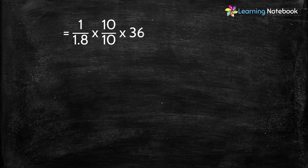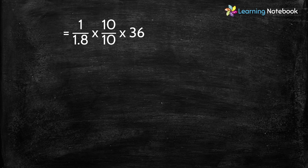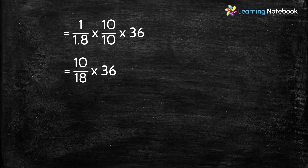So let's remove the decimal point. Since we have only one decimal place, let's multiply the numerator and denominator by 10. We get 1 upon 1.8 into 10 upon 10 into 36. Now 1 into 10 equals 10, and 1.8 into 10 equals 18, so we get 10 by 18 into 36. Simplifying, 18 into 2 equals 36, so we get 10 into 2 which equals 20.